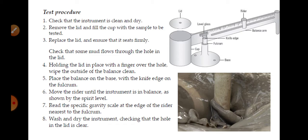Replace the lid. Again, you will close the cup with the lid and ensure that it sits firmly, because if it is not sitting firmly, then there is a chance of wrong information on the mud weight. Check that some mud flows through the hole in the lid. At the top of the lid in the center, there is a small hole available. When you put the lid upon the mud cup, then automatically excess quantity of the mud which is present in the cup will come outside. That is the indication of the correct mud filling process.